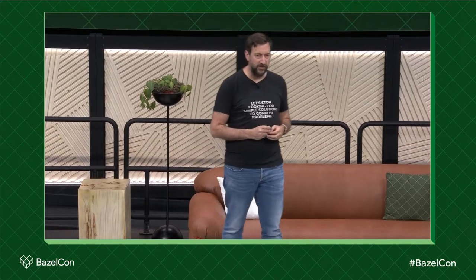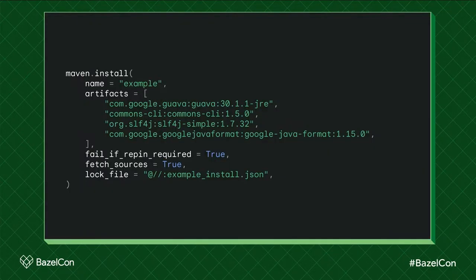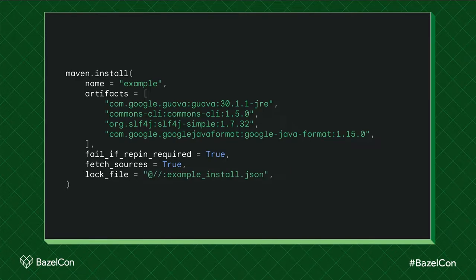This is what it looks like in Bzlmod. We've loaded the extension, assigned it to maven, and we're using a tag class called install. It's basically the same. The only minor change is we've replaced maven_install.json with lock_file — because normally when you talk to people about it, you say "what's the lock file, have you updated that?" Just getting the nomenclature slightly more correct. So this is fantastic — we're done, right?